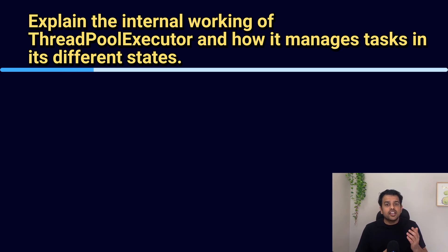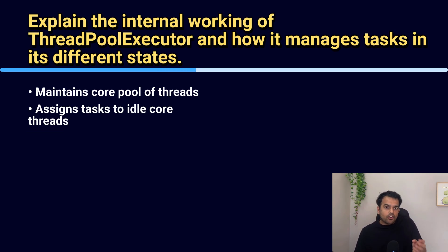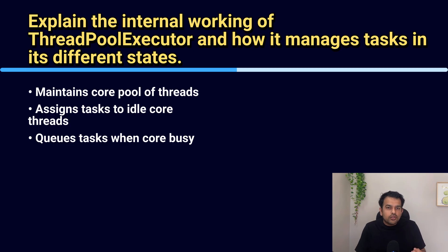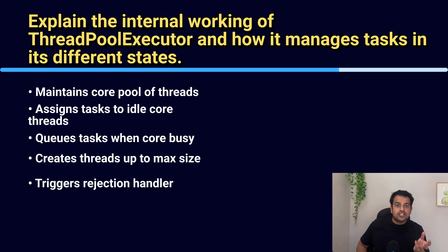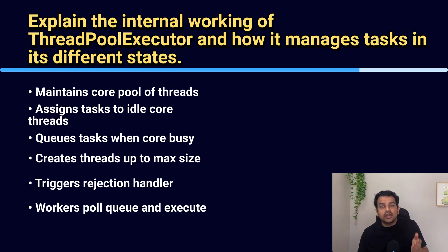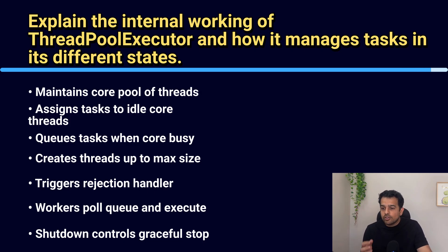ThreadPoolExecutor maintains a core pool of worker threads. When tasks come in, it first assigns them to idle core threads. If all core threads are busy, tasks go to the queue. If the queue is full and threads are below the max size, it creates new threads. If both are exhausted, the rejected executor handler gets triggered. Each worker takes tasks from the queue and executes them in a loop. Finally, shutdown and terminal states control how threads stop gracefully.